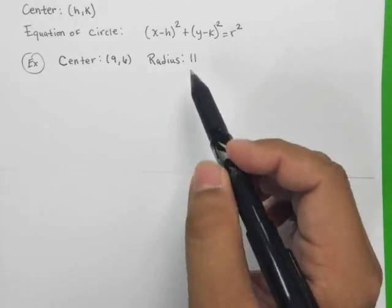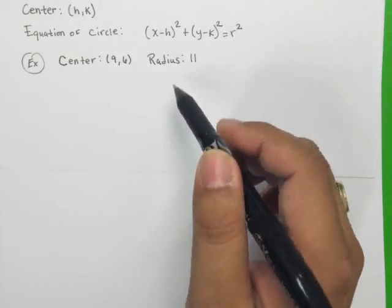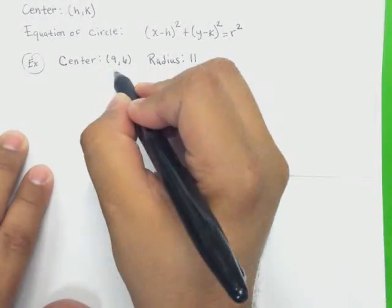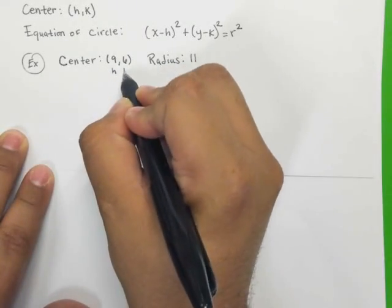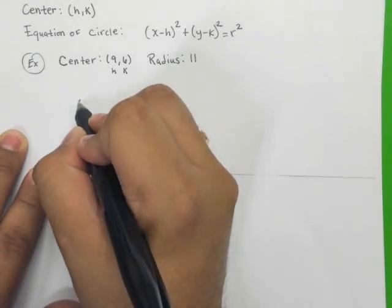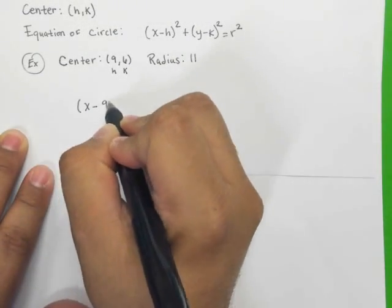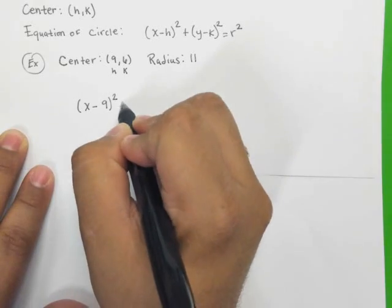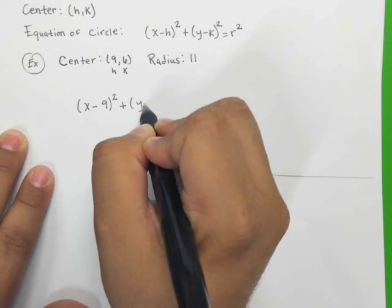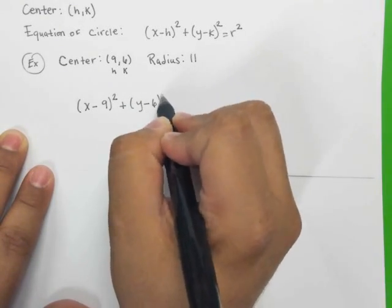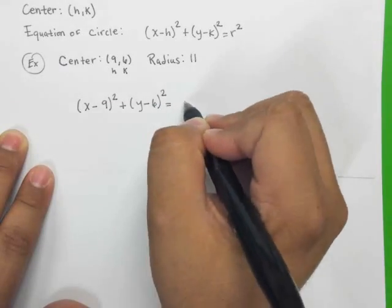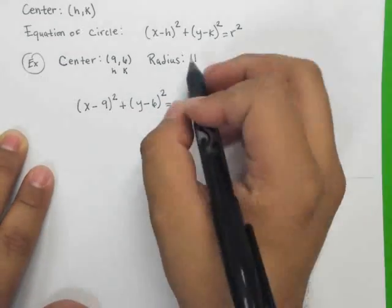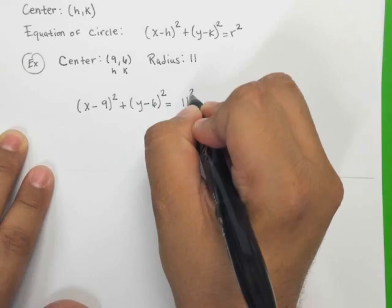So this is actually very easy to compute. All you have to do is write out here that this is your h and this is your k, and then you're going to have x minus 9, quantity squared, plus y minus 6, quantity squared, which equals the radius squared, which is 11 squared.